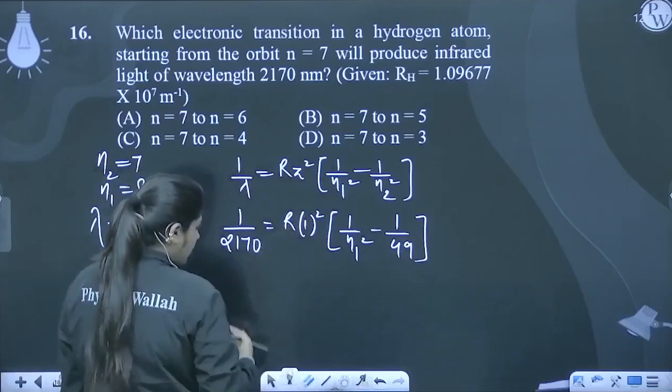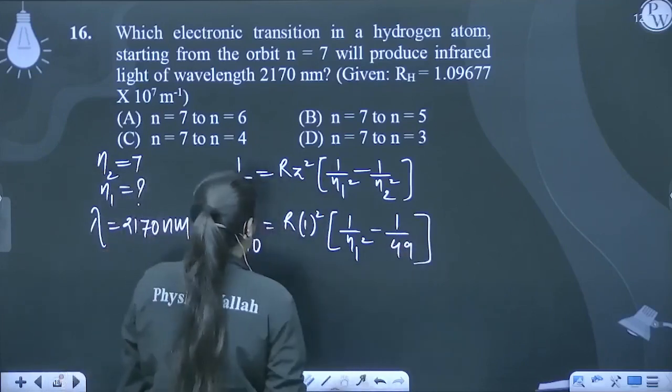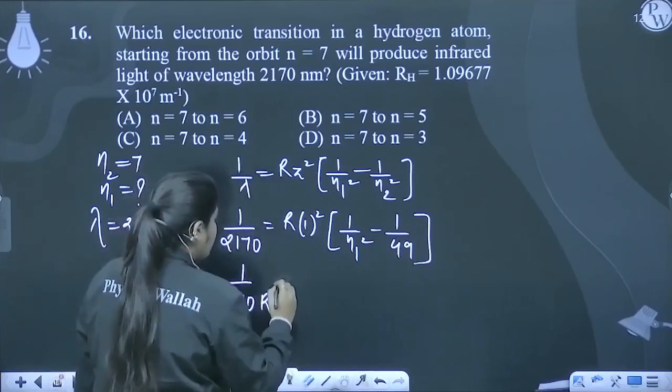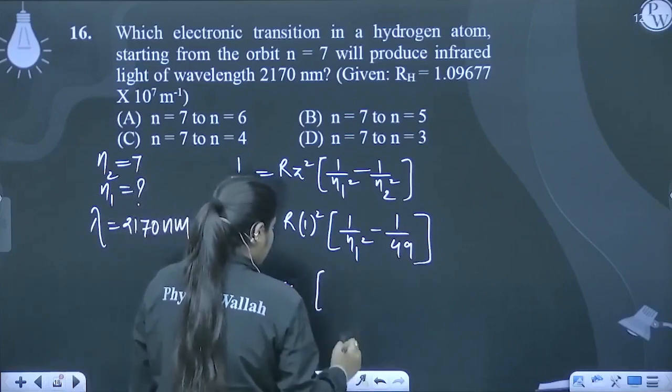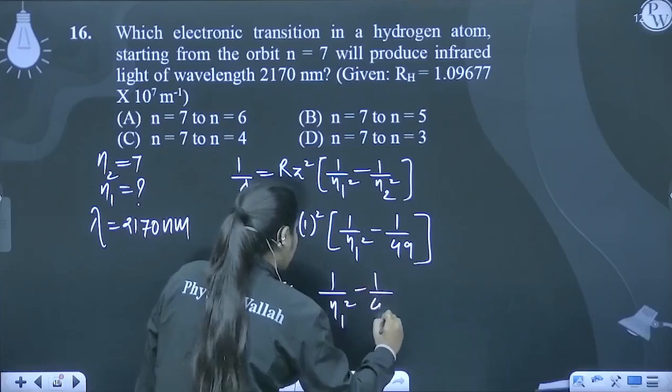Ma agar R ko idher leya haun, isi step me leya haun. So, 1 upon 2170, R is equal to yeh pura, 1 upon n1 square minus 1 upon 49.